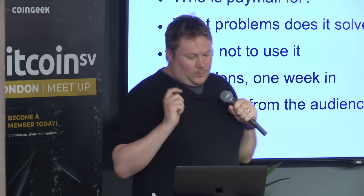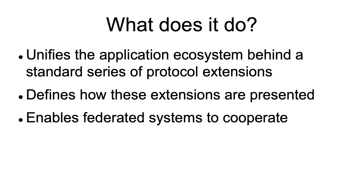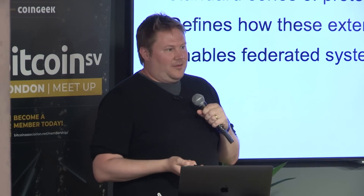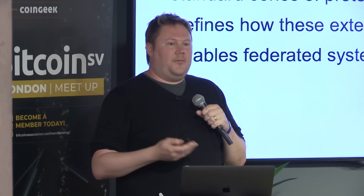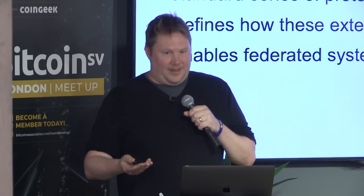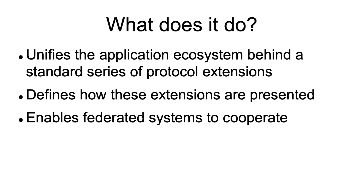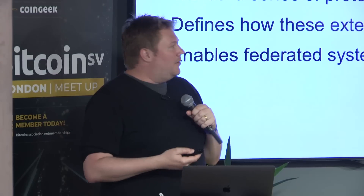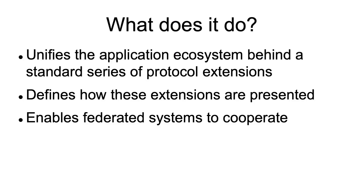What does Paymail do and who is it for? Really, what it is is a standardization of things that already happen — it unifies the application ecosystem. If you look at how to do a multi-sig wallet right now, you can do that with Copay, but every holder has to have a Copay wallet. You can't have a HandCash wallet, a CentBee wallet, and an Electrum wallet in a group together. So this is a series of protocols that tries to address those walled gardens, with a definition of how capabilities are advertised, how specs are published, and how these federated systems cooperate.